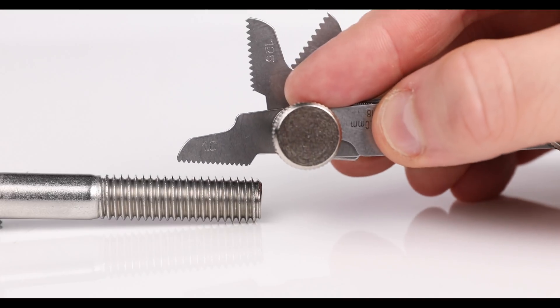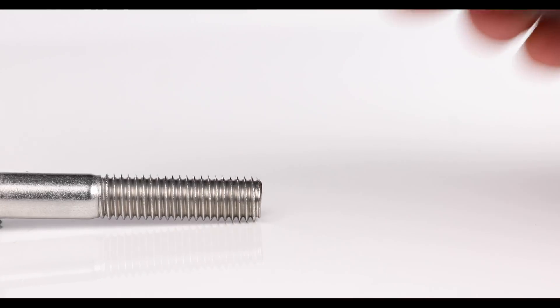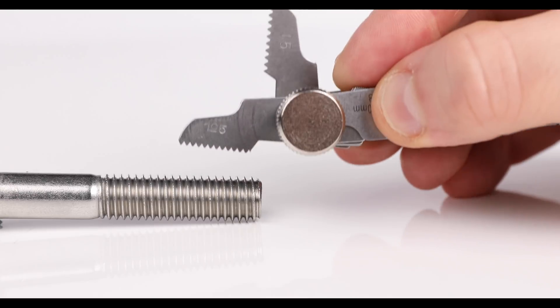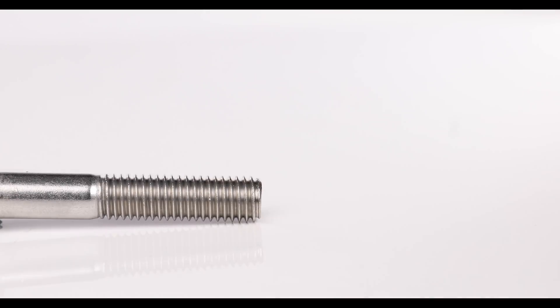So how do we use a leaf gauge? Well, it's pretty simple actually. All you need to do is place one of the leaves onto the thread of the screw like this, until you find the one that correctly fits.